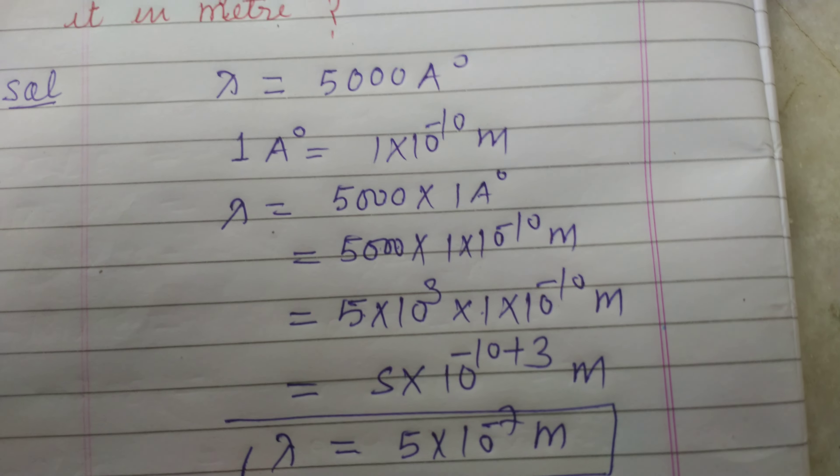Question is the wavelength of light is 5000 angstrom. Express it in meter.